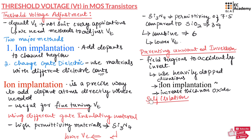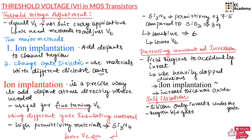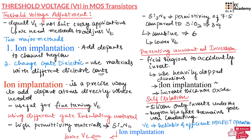MOSFET transistors naturally self-isolate if silicon only inverts under the gate and the region between the gates remains non-conducting under normal bias conditions. The threshold voltage is very important for reliable and efficient MOSFET operation. Techniques like ion implantation help in optimizing MOSFET performance and prevent errors in the operation of integrated circuits.